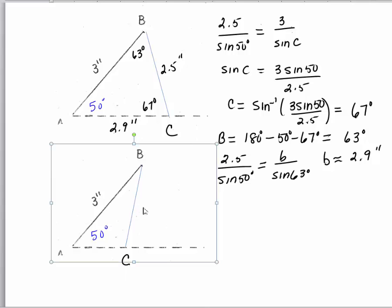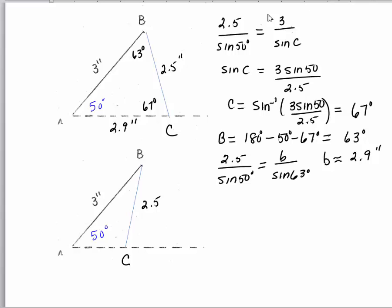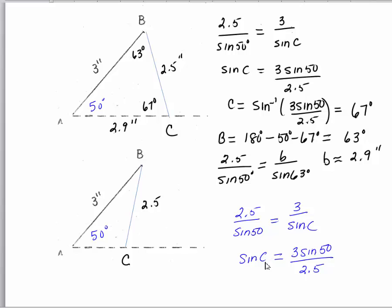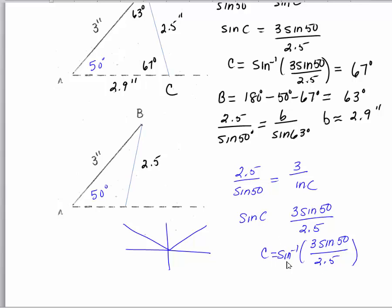How do we find this obtuse angle? We set up the problem in a similar fashion — we're going to have the same exact trig ratio. We've got 2.5 is to the sine of 50 as 3 is to the sine of C. Solving for sine C, we get sine C equal to 3 sine 50 over 2.5, so C is the inverse sine of 3 sine 50 over 2.5. But we already got one value for this back in our first triangle: 67 degrees. Let's call it C sub 1.